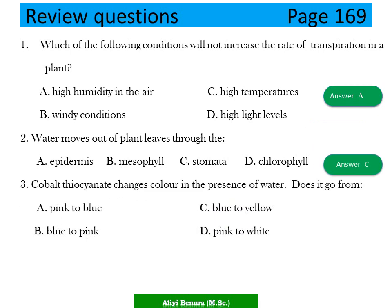Question 3: Cobalt thiocyanate changes color in the presence of water. What color change occurs? A) Pink to blue, B) Blue to pink, C) Blue to yellow, D) Pink twice. The answer is B — blue to pink.